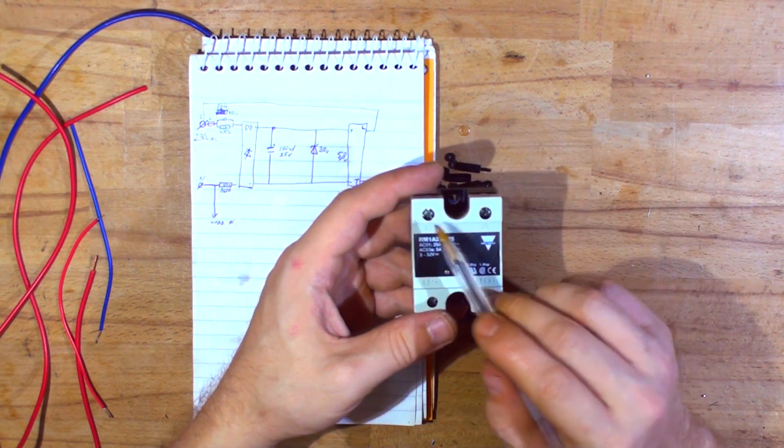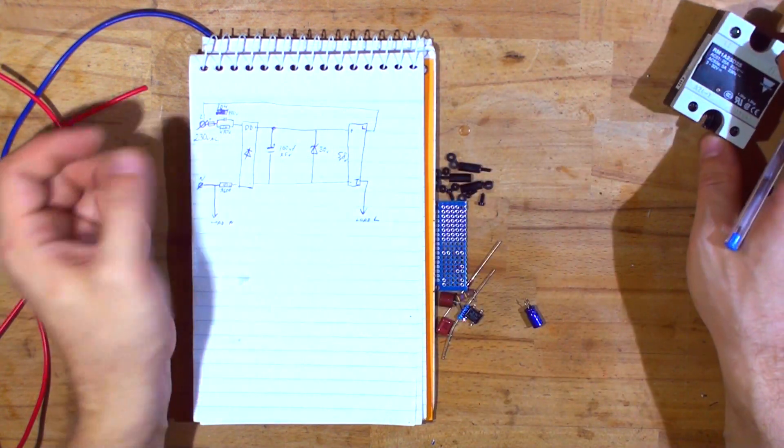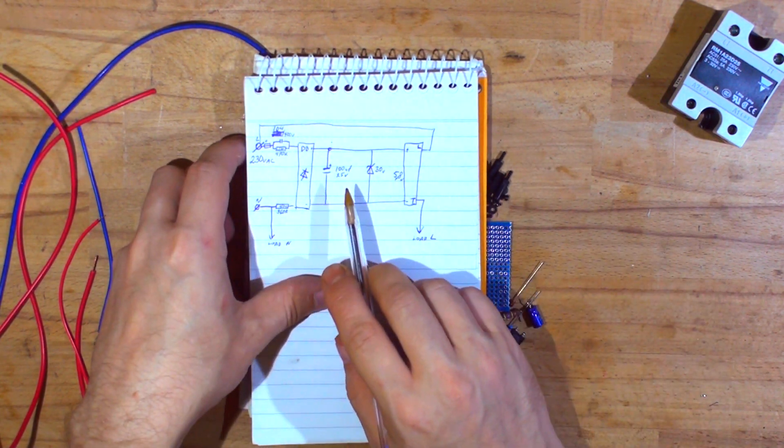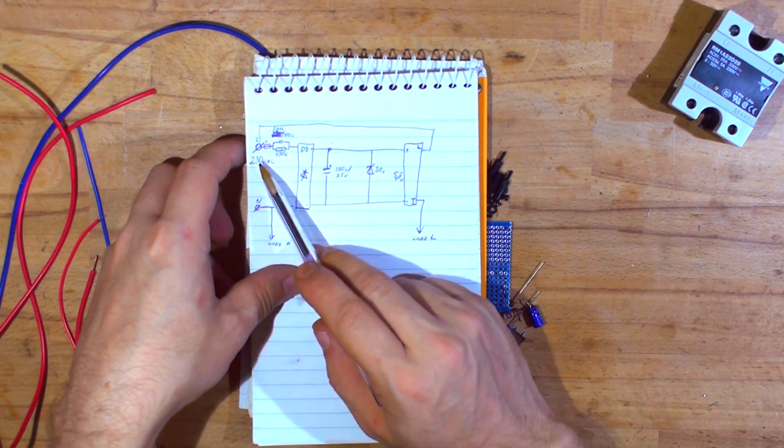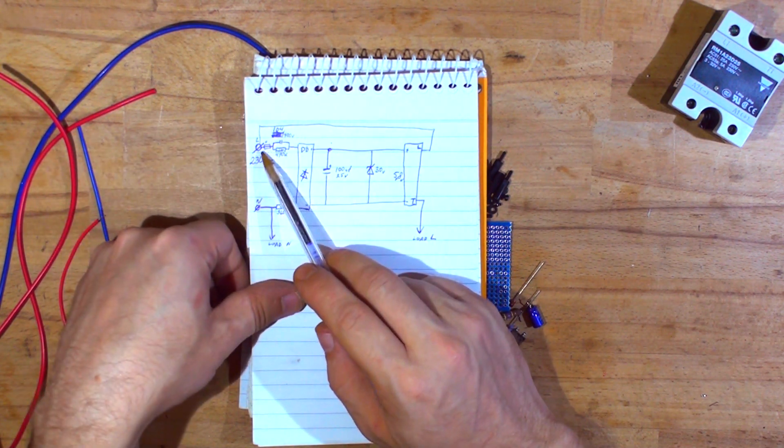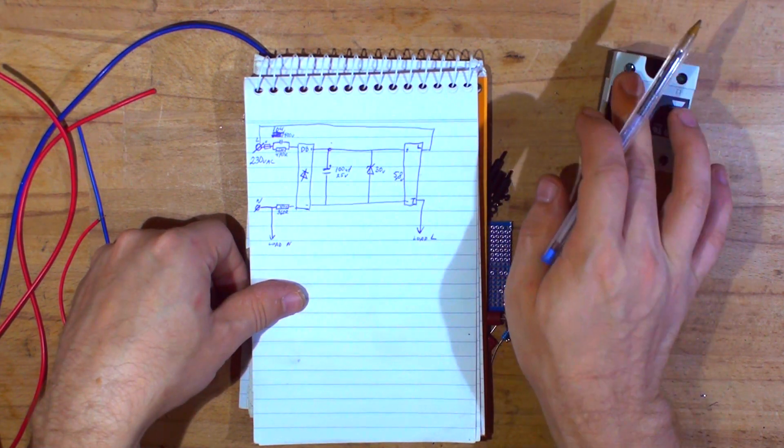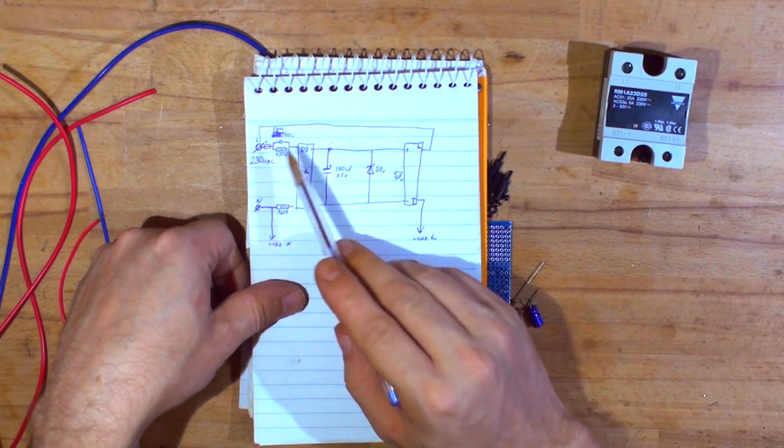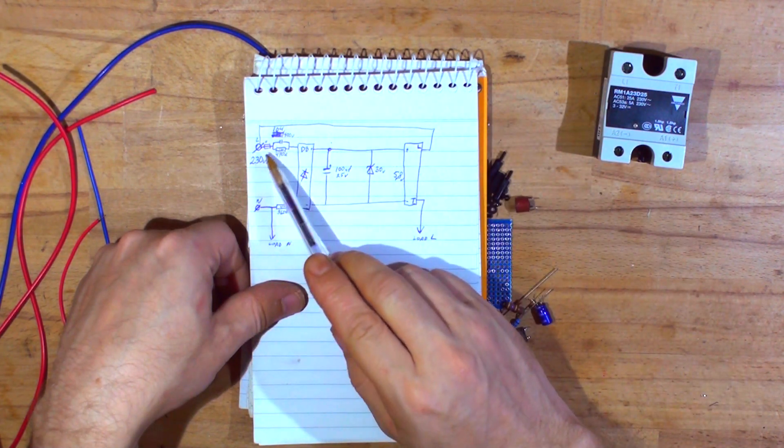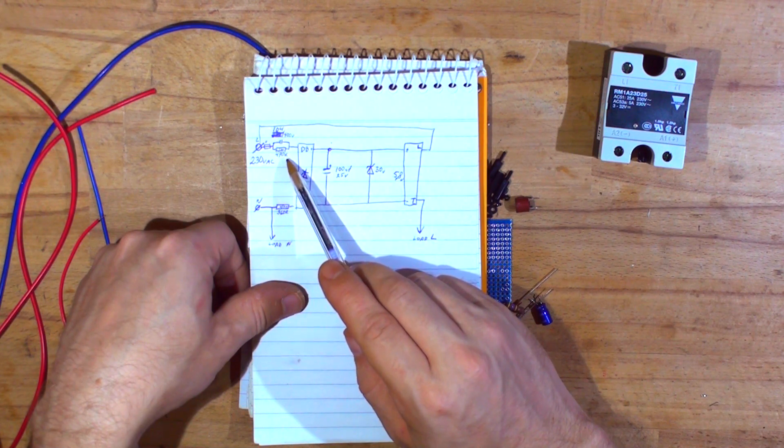This is the schematic that I've designed. We have live coming in after the switch, not before. The live goes straight to the live of the relay to L1 here, then we've got a fuse which I've used 315 milliamps - that's plenty. Then we've got a 104, 400 volts capacitor with a 740K 1 watt discharge resistor.